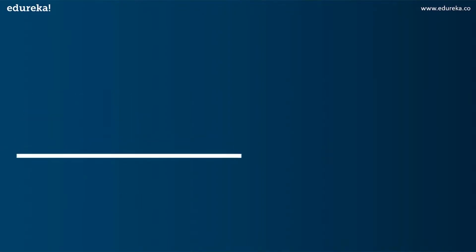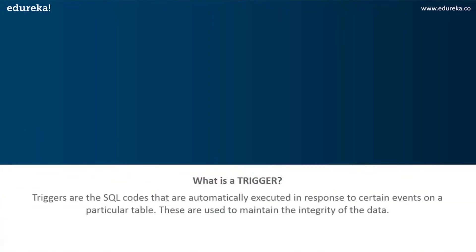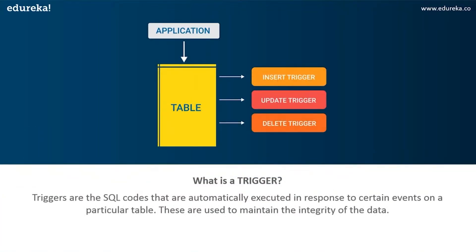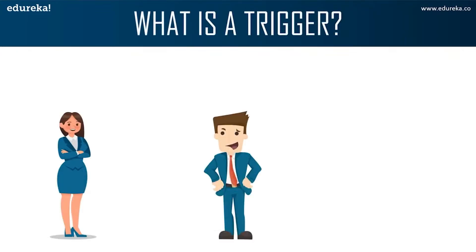The first topic in today's discussion is what are triggers. Triggers are SQL code that are automatically executed in response to certain events on a particular table. These are used to maintain the integrity of the data in a given table. A trigger in SQL works similar to a real-world trigger.